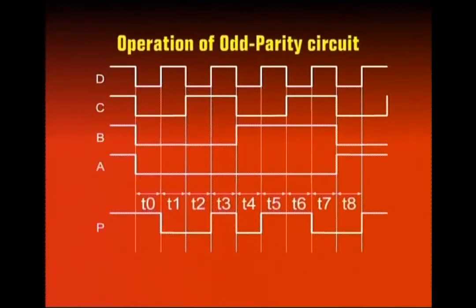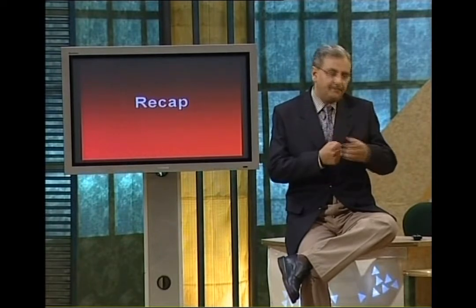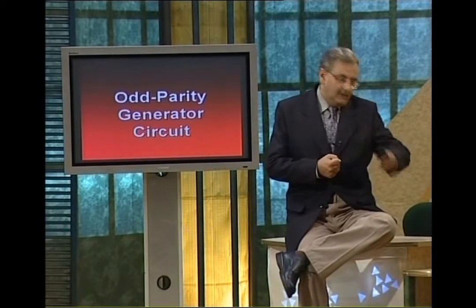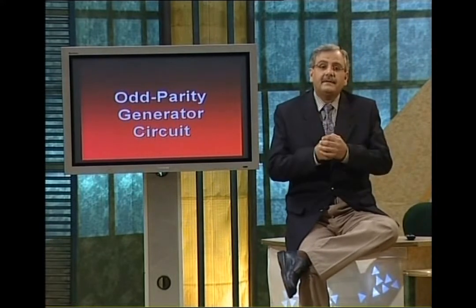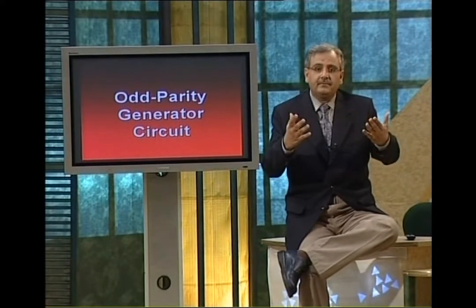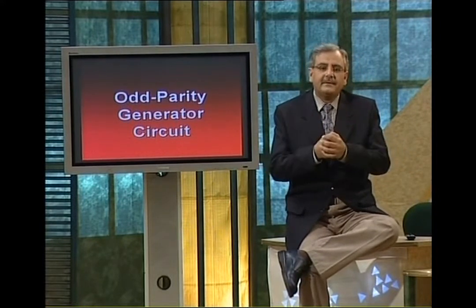Looking at the timing diagram of the odd parity generator circuit, the A, B, C, and D timing diagrams represent the changing 4-bit data values. During interval T0 the output of the two exclusive OR gates is 0, so the output of the exclusive NOR gate is 1. At interval T1 the outputs of the two exclusive OR gates are 1 and 0, so the exclusive NOR gate output is 0. Comparing the timing diagram P for intervals T0 to T8 with the function table values, they are identical, verifying the circuit is working correctly.